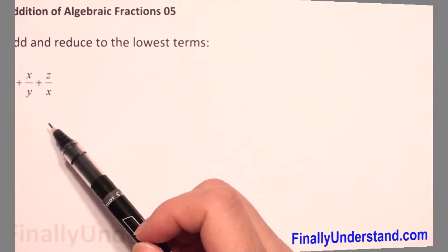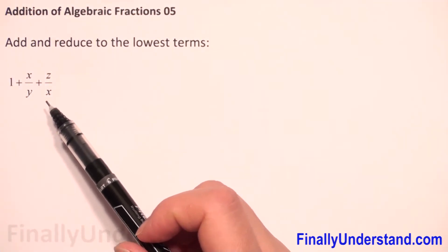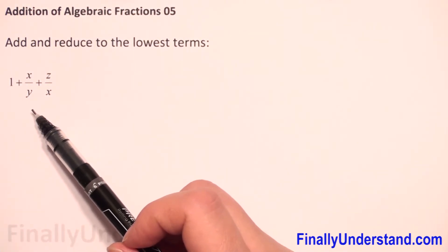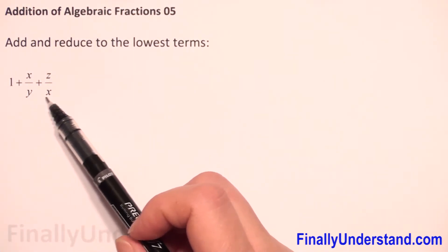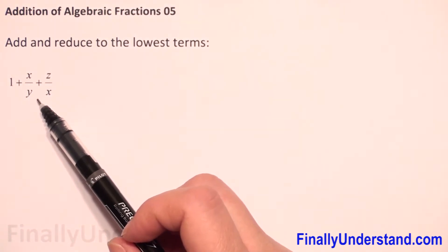We have to add and reduce to the lowest terms. We have here algebraic fractions. How do we add algebraic fractions? The same way we add regular fractions — it means we need to have the same denominator.